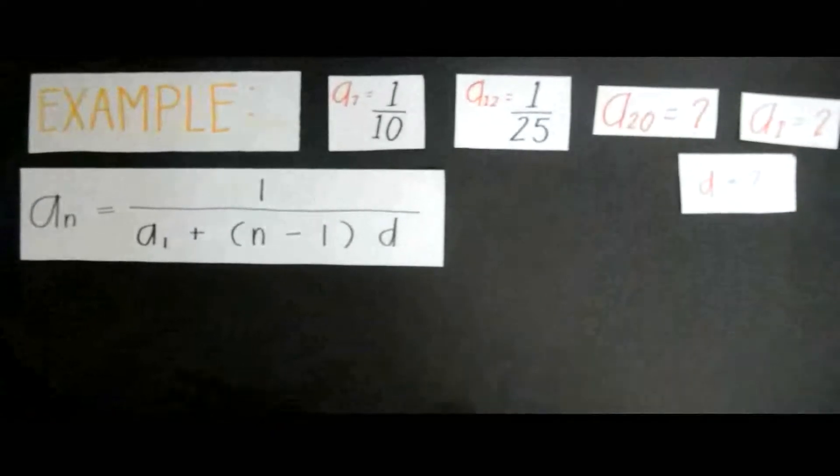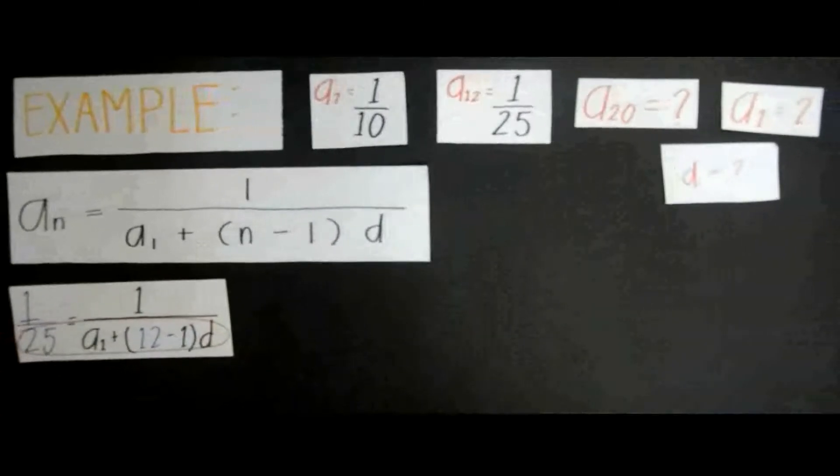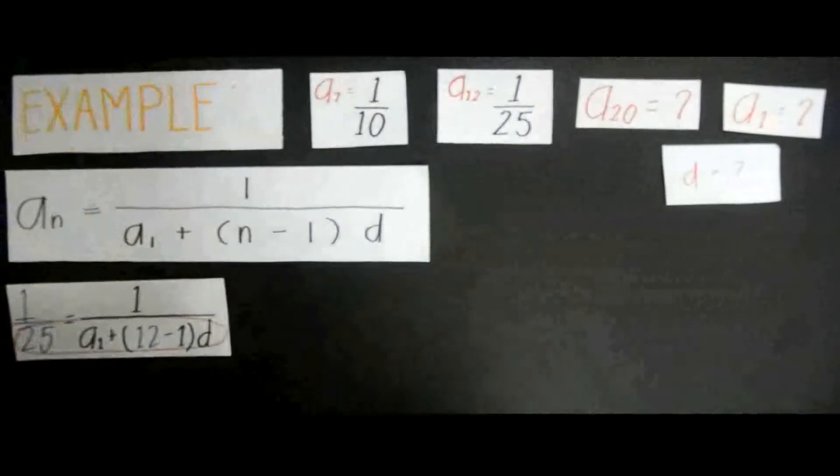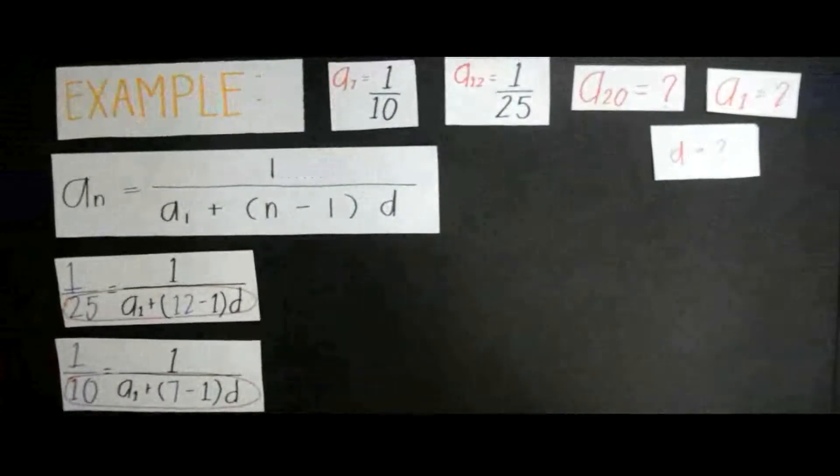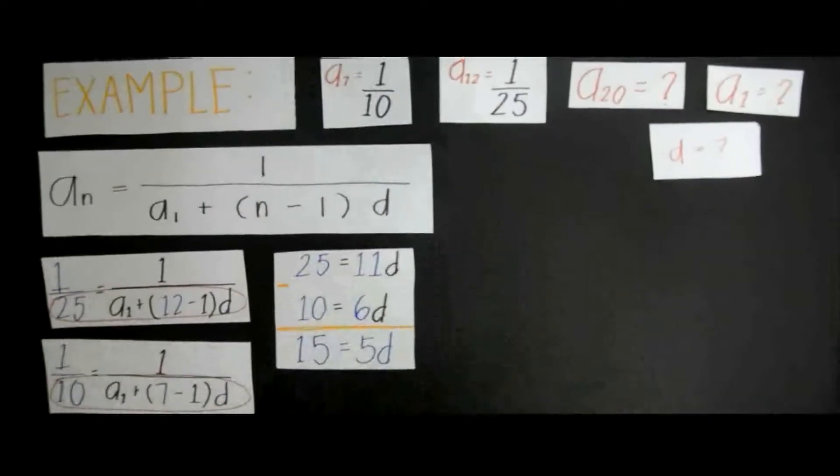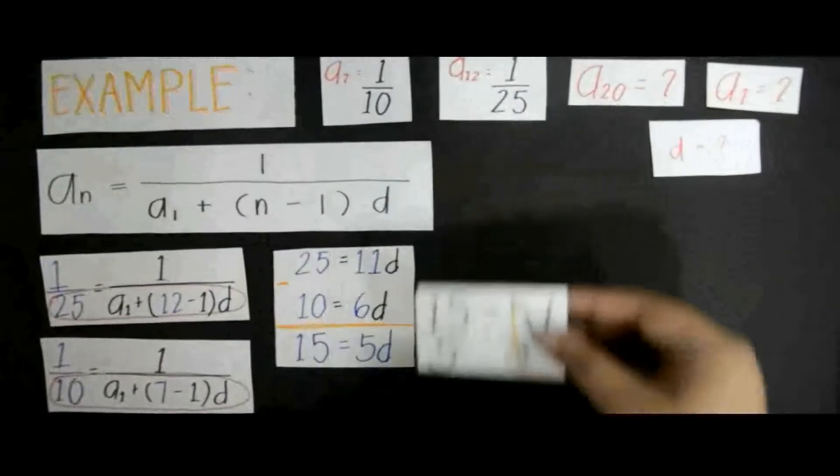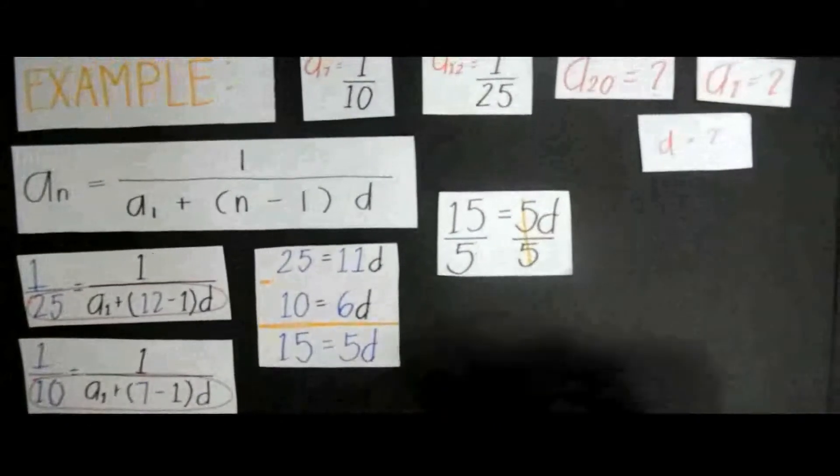We must substitute both equations, a_7 and a_12, into the formula. Once we do that, we must subtract both. Then you get d, the common difference. Once you have d, plug in d into one of the formulas. Now you can get a_1.